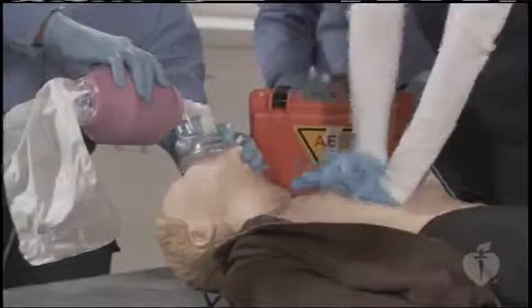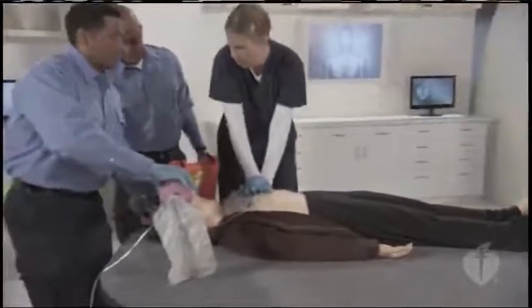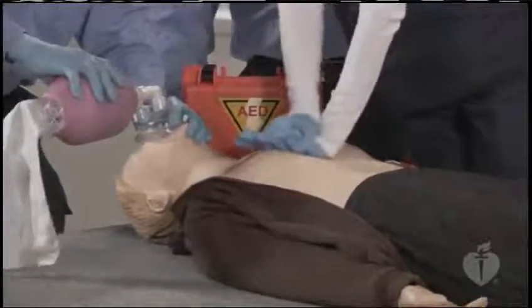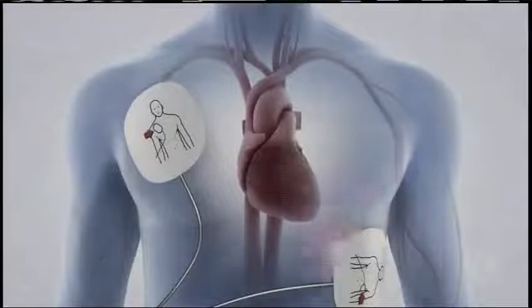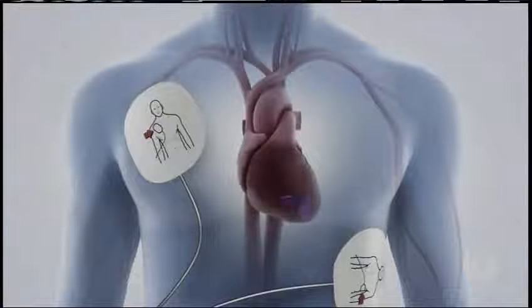Another key step in BLS is providing rapid defibrillation if indicated. Although CPR can provide vital oxygen and blood circulation, defibrillation is essential to establishing a normal rhythm in patients with a lethal shockable rhythm. The delivery of an electrical shock briefly stops all electrical activity in the heart. If the heart is still viable, its normal pacemakers may resume electrical activity, resulting in a perfusing rhythm or ROSC. Survival rates are highest when CPR is provided immediately and defibrillation for an initial shockable rhythm occurs within 3 to 5 minutes.